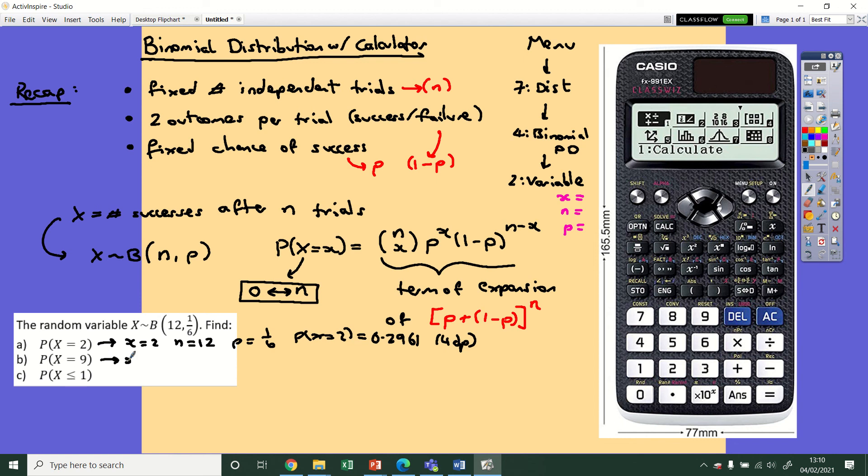X is nine is similar. You just want to change x to nine. So same parameters, different x. The chance that x equals nine, if you press equals, it will turn you back to that previous page. And then you get 1.263 times 10 to the minus five. That's your probability. Normally you're going to want four decimal places for each question, but look at what it asks you to do.